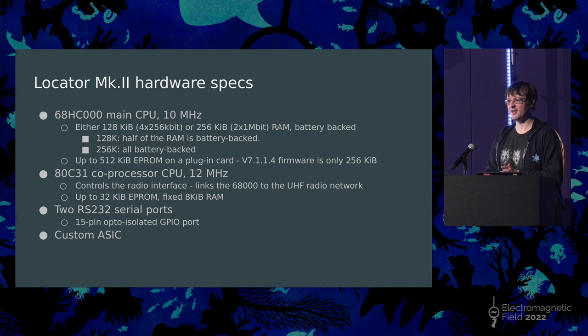Only one of the units actually had the transmitter board and the program ROM that enables it, so there seem to be two hardware versions. One can just do navigation and spits the location out the serial port every now and again, like a GPS receiver. The second version is the stolen vehicle recovery — the Trackback version. It's quite a powerful device for its time: a 10 MHz Motorola 68000, as used in the Atari ST and Amiga, with 1-8K or 256K of RAM depending on the hardware version, some of which is battery-backed, and a plug-in card with the program ROM.